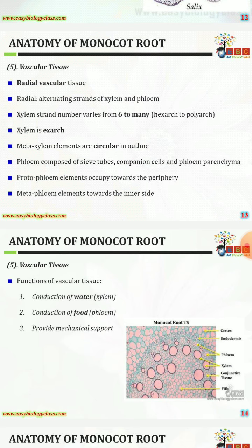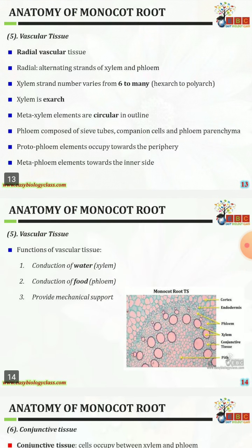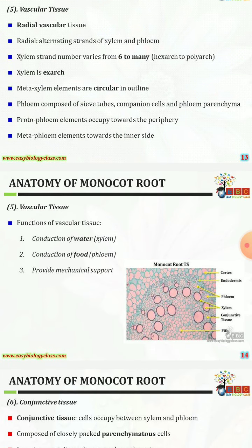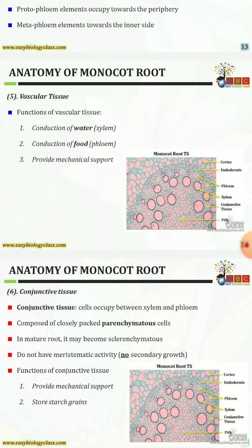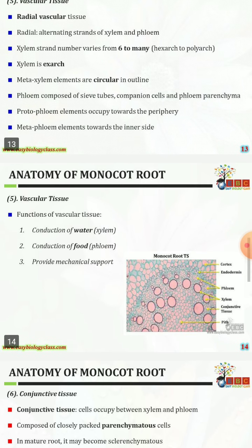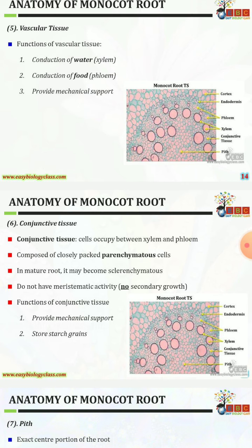The fifth part is the vascular tissue. Radial vascular tissues are present, meaning alternating strands of xylem and phloem alternate with each other. Xylem strand number varies from six to many, meaning hexarch to polyarch. Xylem is exarch; protoxylem elements are outside and metaxylem elements are circular in outline. Phloem is composed of sieve tubes, companion cells, and phloem parenchyma; protophloem occupies the periphery and metaphloem is towards the inner side. Functions of vascular tissue: conduction of water in the case of xylem, conduction of food in the case of phloem, and mechanical support.